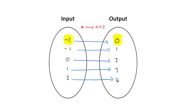And conversely, if you take each output value, it is only achieved by one and only one input value. In other words, there aren't two inputs that give you the output of 1, and there aren't two inputs that give you an output of 2. Every single output is achieved by only one input, and so therefore we call this a one-to-one mapping. One input goes to one and only one output.